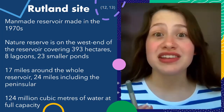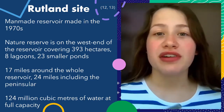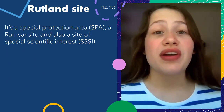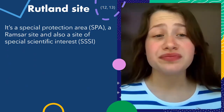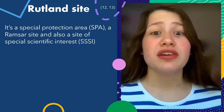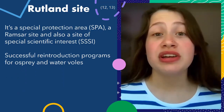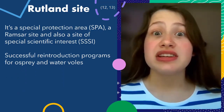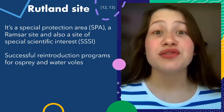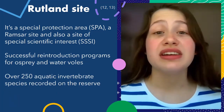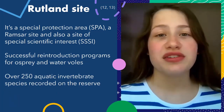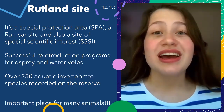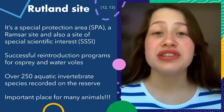Because of its vast size, Scandinavian birds that are migrating often see it and land at Rutland, making it an SPA, a Ramsar site, and a SSSI. There have also been a lot of reintroduction projects at Rutland, including osprey and water voles. There's a healthy population of otters, and over 250 aquatic invertebrate species found at Rutland. Because of this, the water quality must be good to help support all of these important animals.